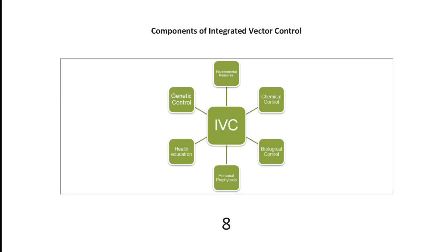The components of Integrated Vector Management generally include six different measures: environmental measures, chemical controls, biological control, personal protective methods, health education and genetic control. Genetic control is comparatively a newer component of Integrated Vector Control.